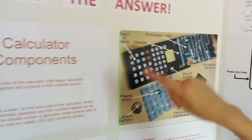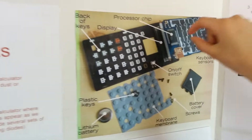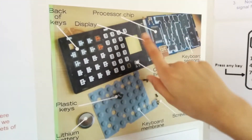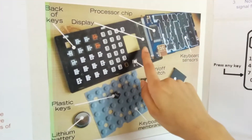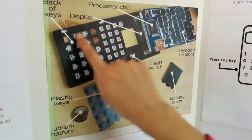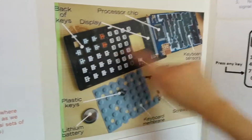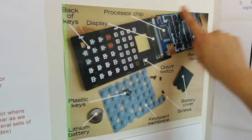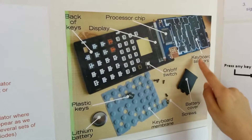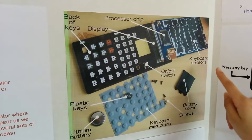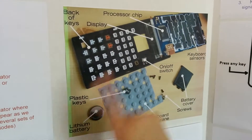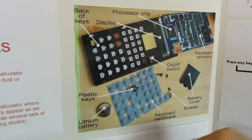Here's the inside of a calculator. There's a processor chip, the display — that's the screen — the back of the keys, and these are the keyboard sensors that sense if you press the key or not. The on-off switch, and many other things.